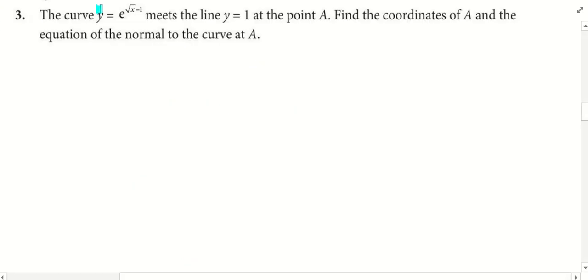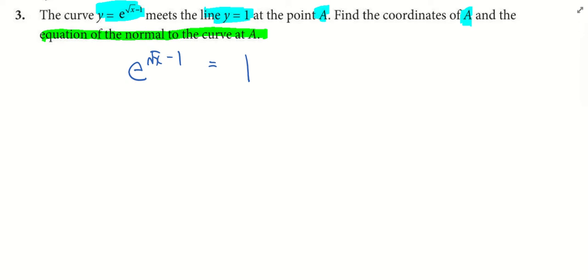First thing in question 3. The curve meets or cuts the line at one point, and this point is called A. After you find the point A, your job is to find the equation of the normal at A. Do we know what is A? Don't know yet. But you know the curve meets the line at A. What should we do? Simultaneous equation. Equate them together. I will straight away equate the curve equal to the line, because y is equal to y. And our job is to find x, right?